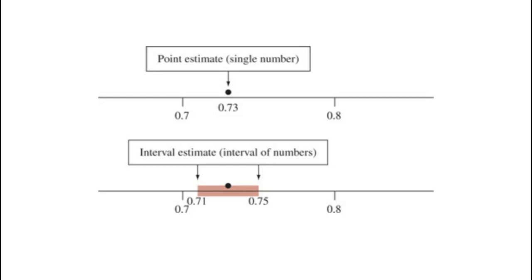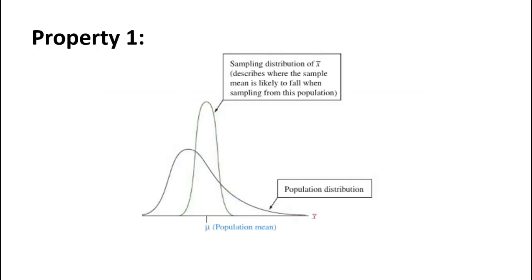A good estimator of a parameter has two desirable properties. Property one: a good estimator has a sampling distribution that is centered at the parameter it tries to estimate. An estimator with this property is said to be unbiased. Under random sampling, the mean of the sampling distribution of the sample mean x-bar is equal to the population mean mu, so x-bar is an unbiased estimator of mu. Similarly, the sampling distribution of the sample proportion equals the population proportion, so the sample proportion is an unbiased estimator of the population proportion.